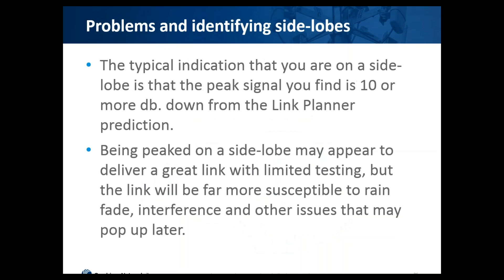The typical side lobe is 10 to 15 dB down, and because of that, the link may give what I call great sunny-day performance, but the first bad weather day, or the first other radio to come on the air and present interference, and the issues pop up much faster than they would on a properly aimed link.